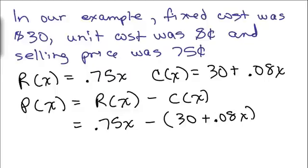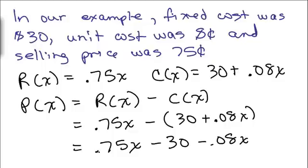Of course, you're going to have to distribute that minus sign: 0.75x - 30 - 0.08x.